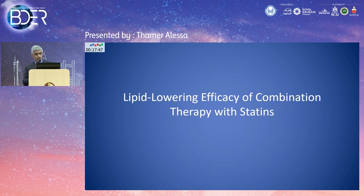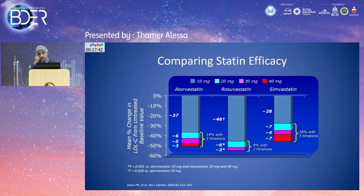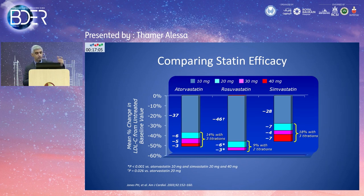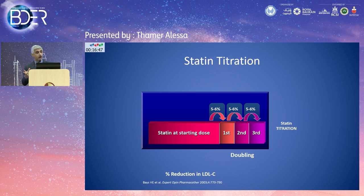Statin efficacy varies by molecule. For the three most widely used statins in Gulf countries — atorvastatin, rosuvastatin, and simvastatin — at 10 mg: atorvastatin lowers LDL by about 37%, rosuvastatin 46% (higher potency), and simvastatin 28%. Doubling the dose provides very modest additional benefit — only about 5-6% extra LDL reduction per doubling. For example, simvastatin from 10 mg to 40 mg adds only about 18% on top of the initial 28%, limiting the value of dose escalation alone.